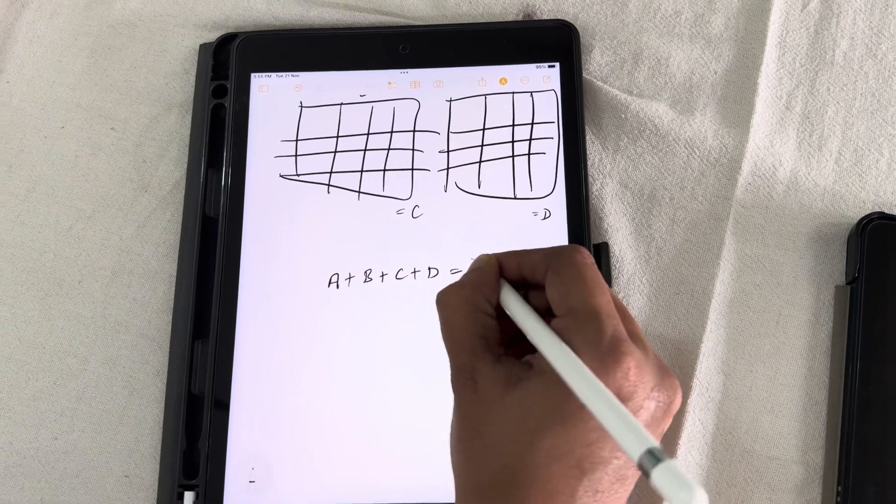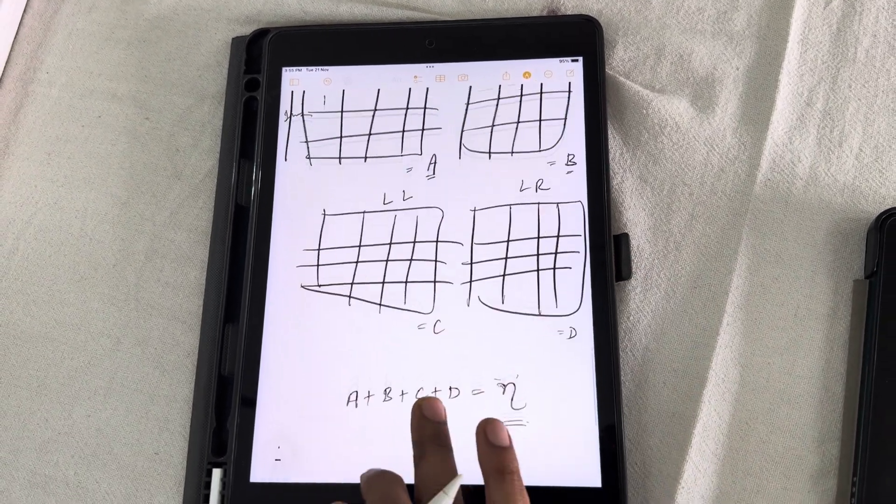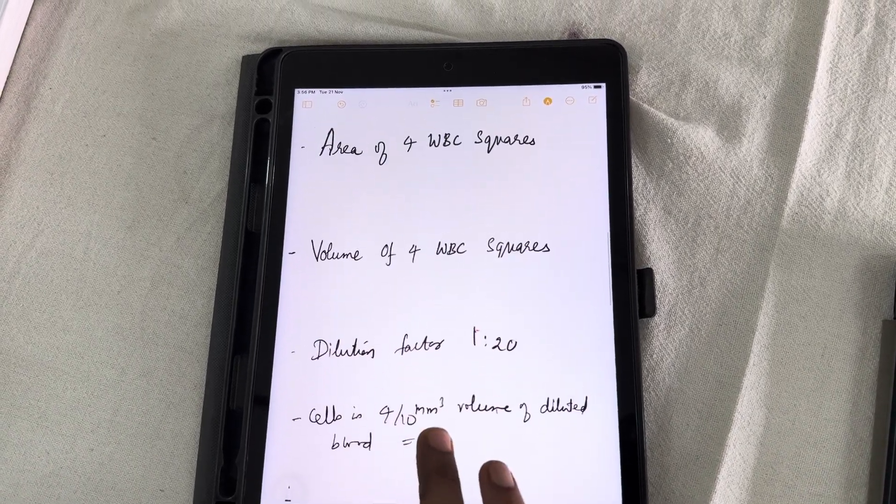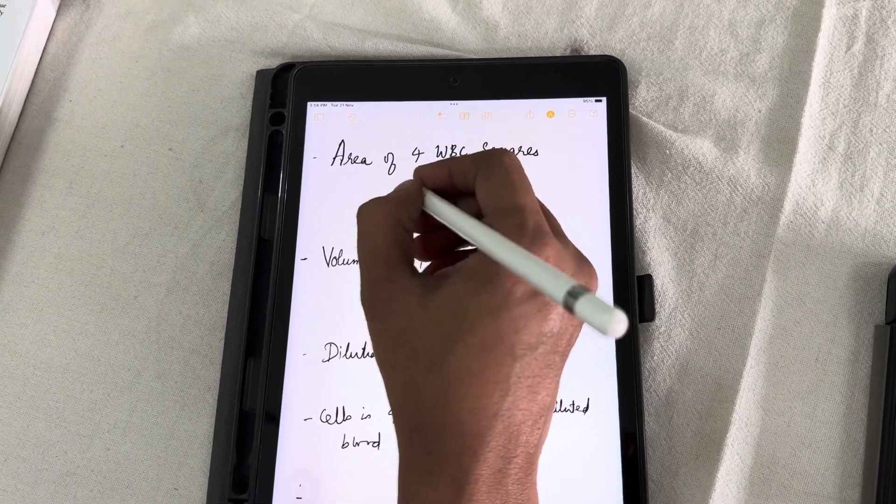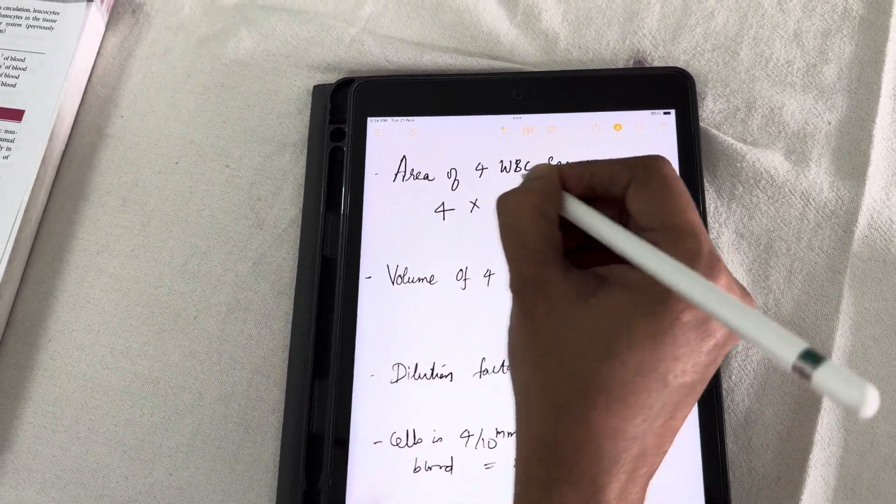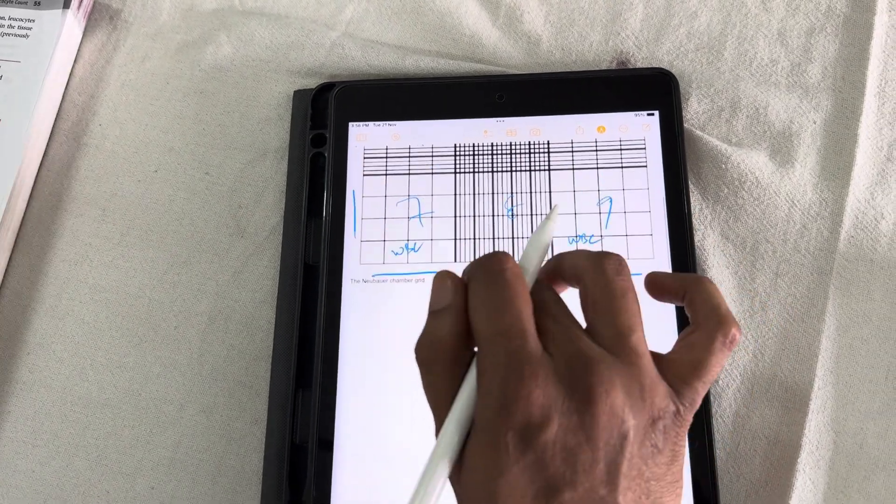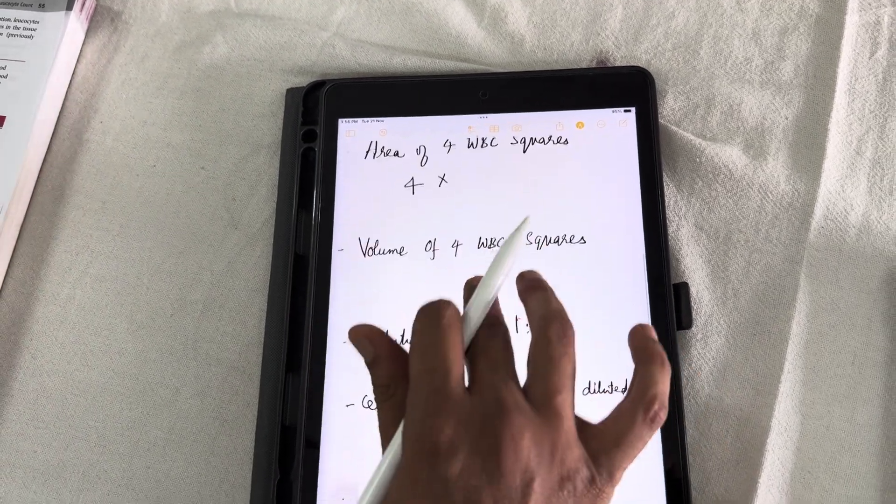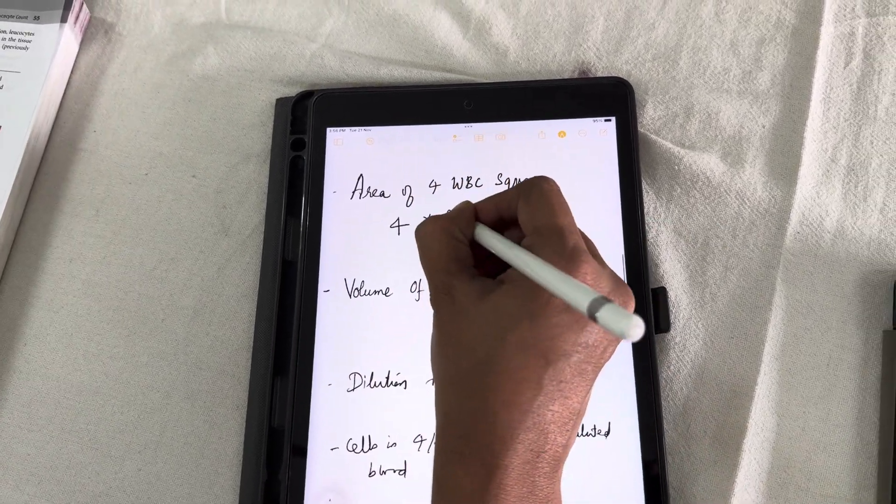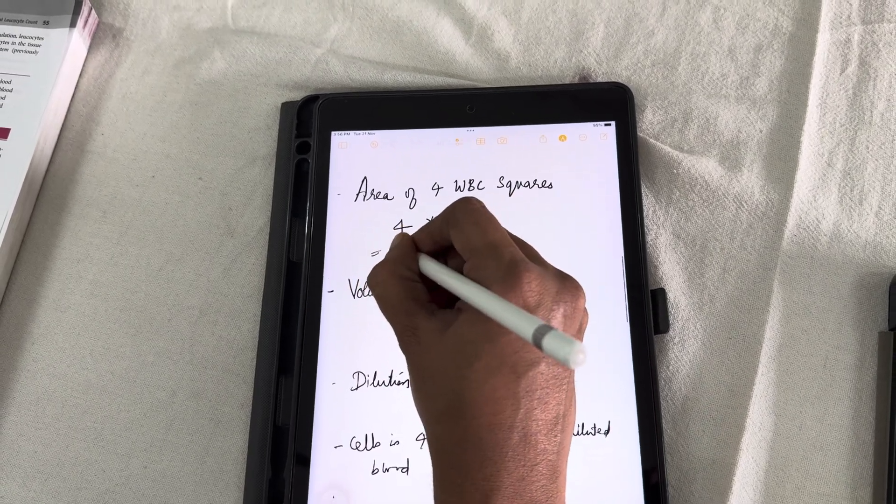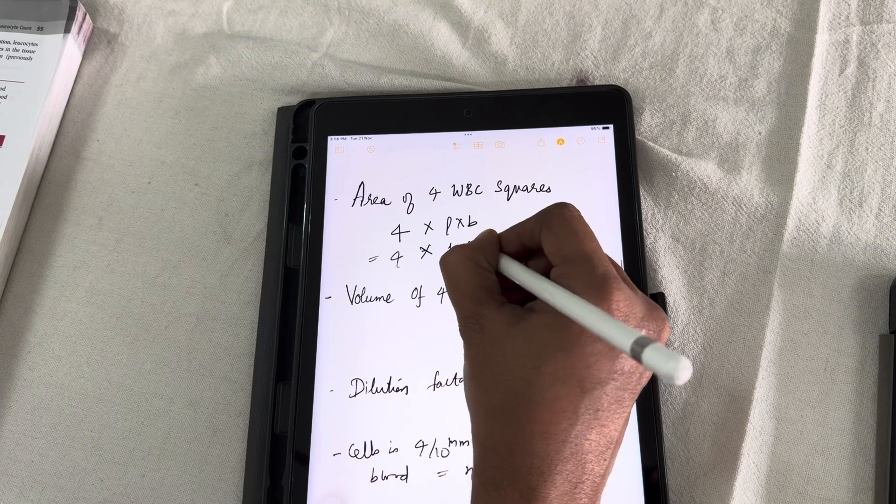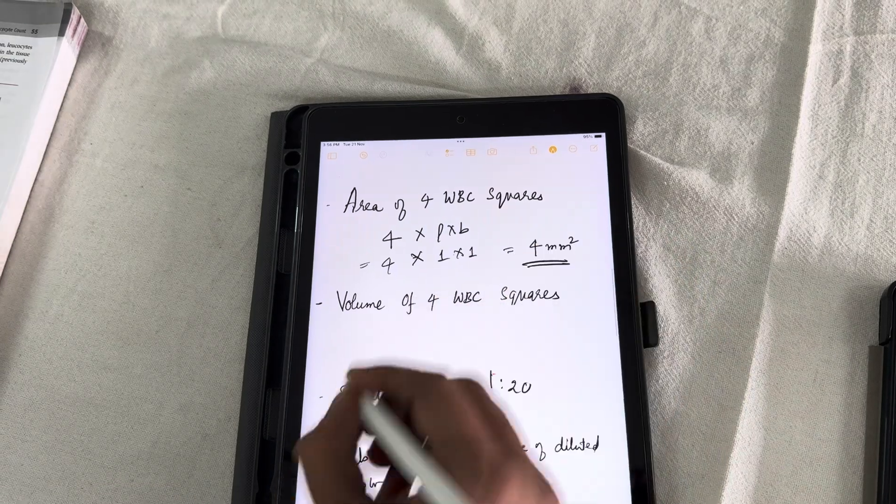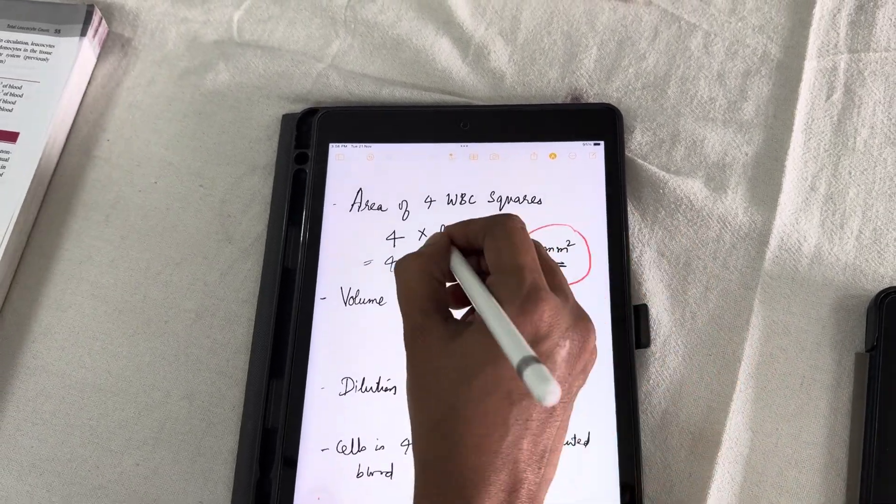Now, consider the calculations. How to calculate the area of the 4 WBC squares. 4 WBC squares means 4 into 1 WBC square. 1 WBC square area is length into breadth length is 1 millimeter breadth is also 1 millimeter. That is length into breadth that is 4 into length is 1 millimeter and breadth is also 1 millimeter. So, 4 WBC squares it is around 4 square millimeter. This is the area 4 square millimeter.